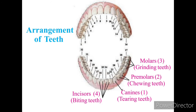The types of teeth are: molars for grinding food, pre-molars for chewing, canines which are tearing teeth, and incisors which are biting teeth. Draw the picture and mention all these types of teeth neatly and carefully.